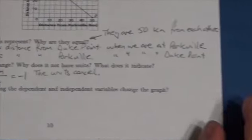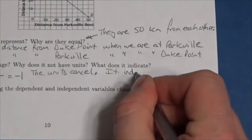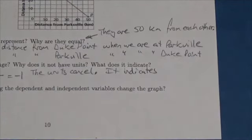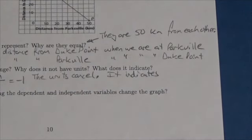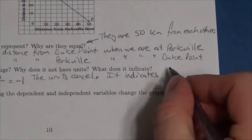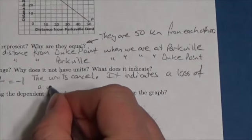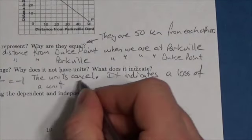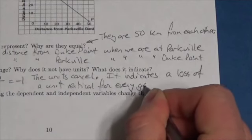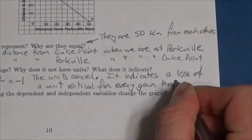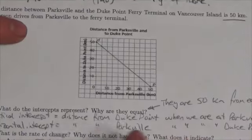Now what does it indicate? Well, what this indicates is basically, without any need to represent or discuss the units, it just indicates a loss of a unit vertically for every gain horizontally, which is essentially what we're seeing here.